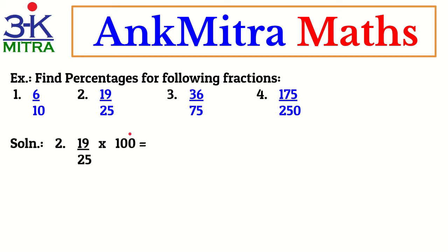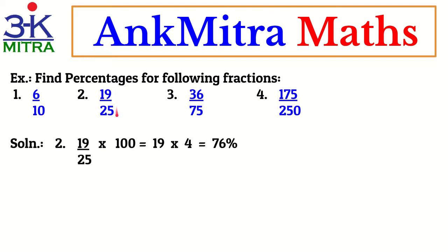The next step will be 19 multiplied by 4. This 25 and 100 have been cancelled and what remains is 4. So 19 multiplied by 4 is 76. The percentage answer for this particular fraction is 76%. Similarly, let's move to the third example.